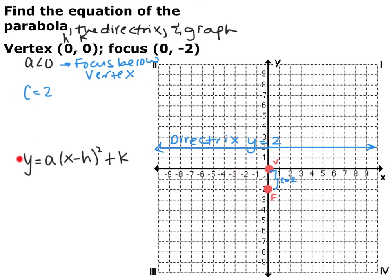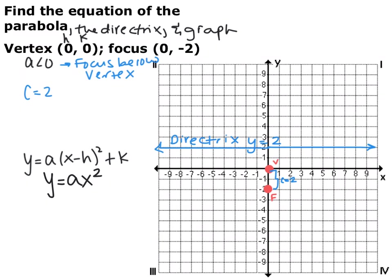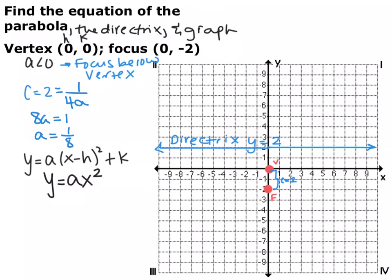The equation of a parabola in vertex form is y equals a times (x minus h) squared plus k, where h and k are the x and y coordinates of the vertex. Our equation is y equals ax squared, because h and k are both 0. To find a, we know a is negative, and c equals 1 over 4a. Since c equals 2, cross-multiplying gives 8a equals 1, so a equals 1/8. Our equation is y equals negative 1/8 x squared.